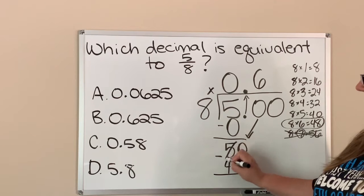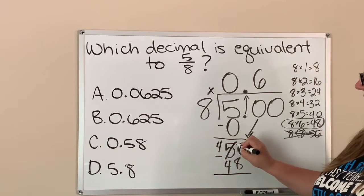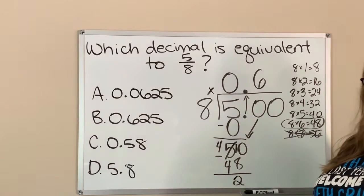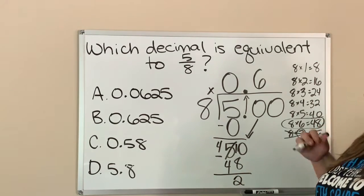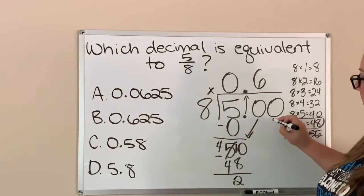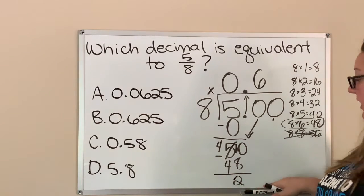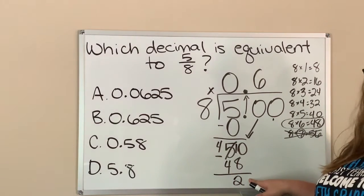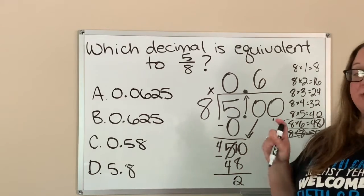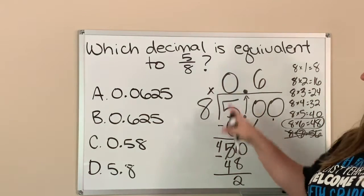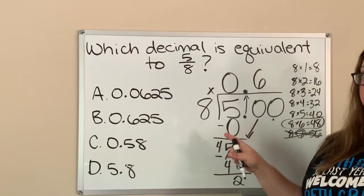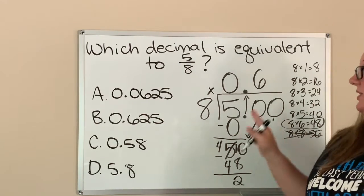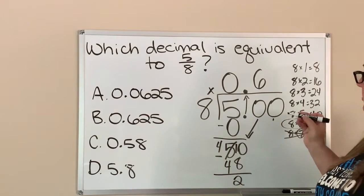Six times eight is 48. Then I subtract — I can't do zero minus eight, so I'm going to borrow, making that a 10. Ten minus eight is two. Now I'm not going to stop because I haven't gotten a zero and nothing has repeated. The only time you stop division when doing fractions and decimals is when you get a zero or when you get a repeating number.